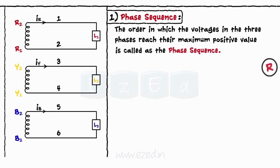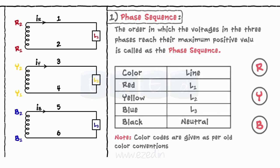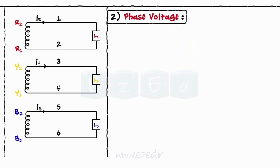Thus for the three-phase system shown, the phase sequence becomes R, Y, B. These phases are also called as lines. Thus we have color codes such as red for line 1, yellow for line 2, blue for line 3, and black for neutral. The next term is phase voltage.